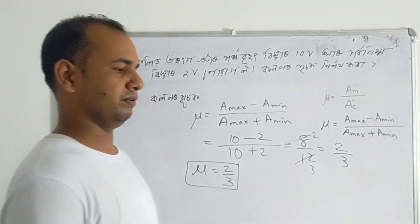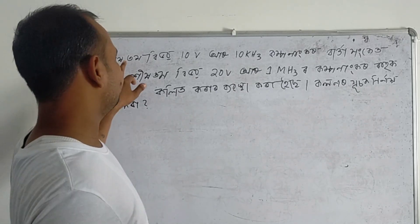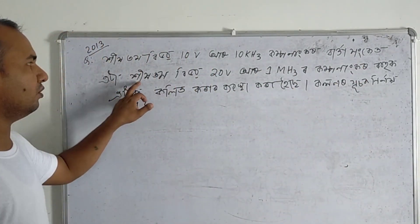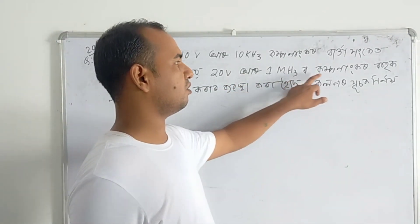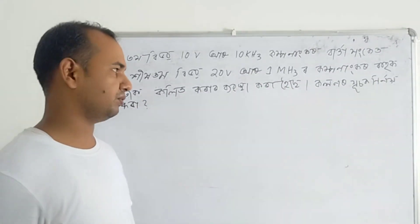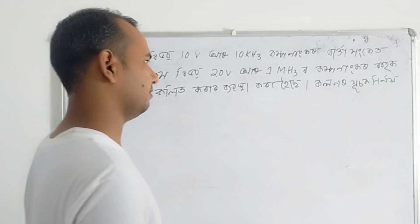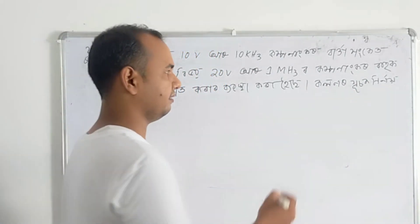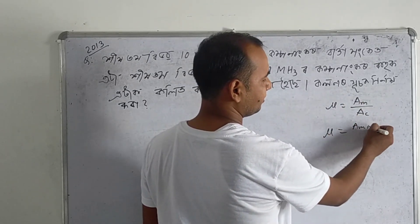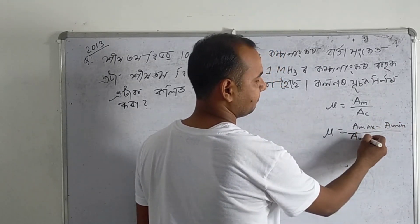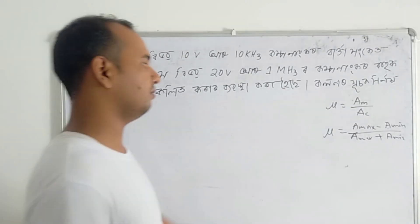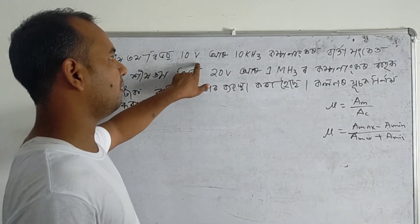Okay, next question. We have a 2013 question. The question gives us a carrier of 10 volts at 10 kHz component and a 20 volt 1 MHz component. Now the modulation index formula is mu equal to A_m divided by A_c, or mu equal to A_maximum minus A_minimum divided by A_maximum plus A_minimum. For this question we need to find the modulation index for the 10 volt 10 kHz component.